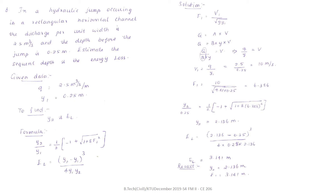The depth before the jump is written as y₁ = 0.25 m; depth after the jump is y₂. So only two data are given: small q and y₁. We have to find the sequent depth y₂ and the energy loss E_L.